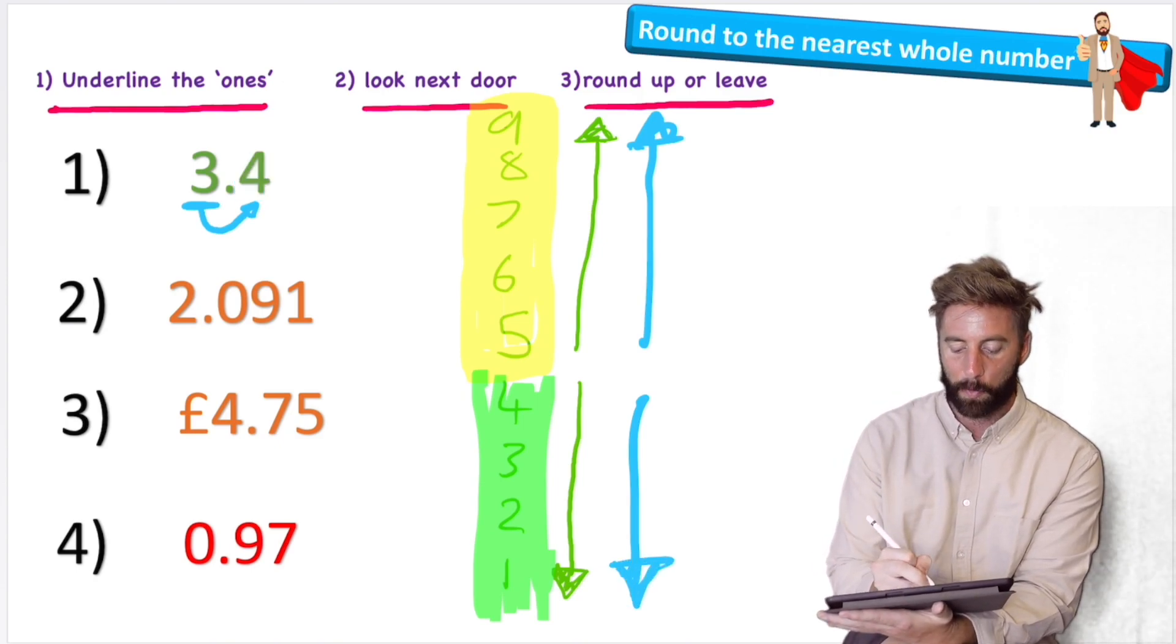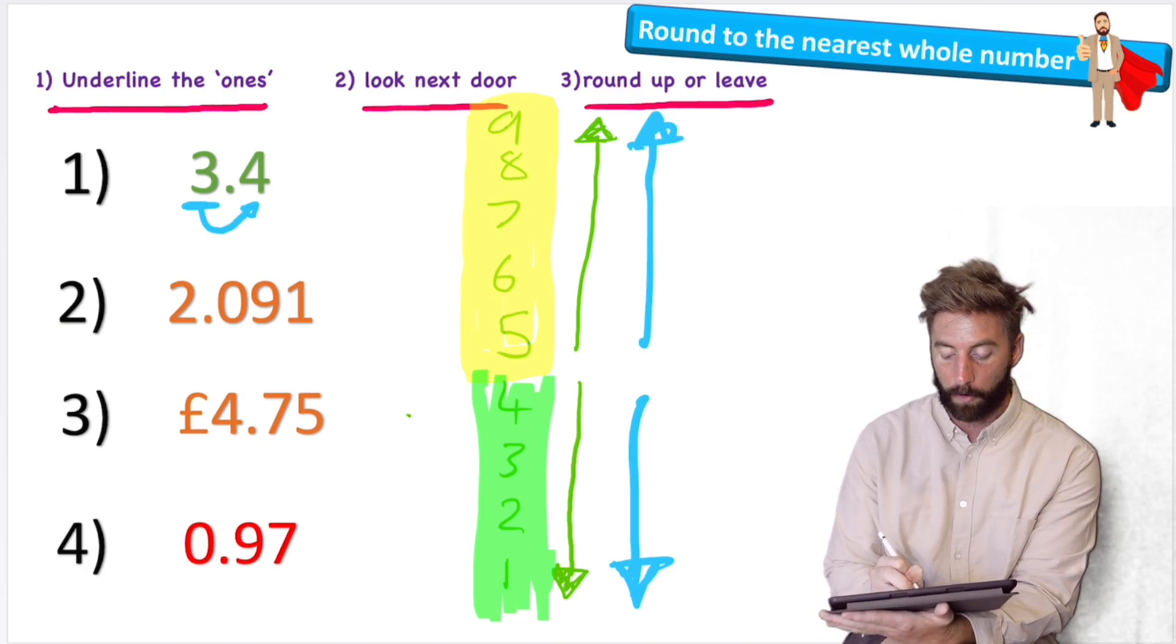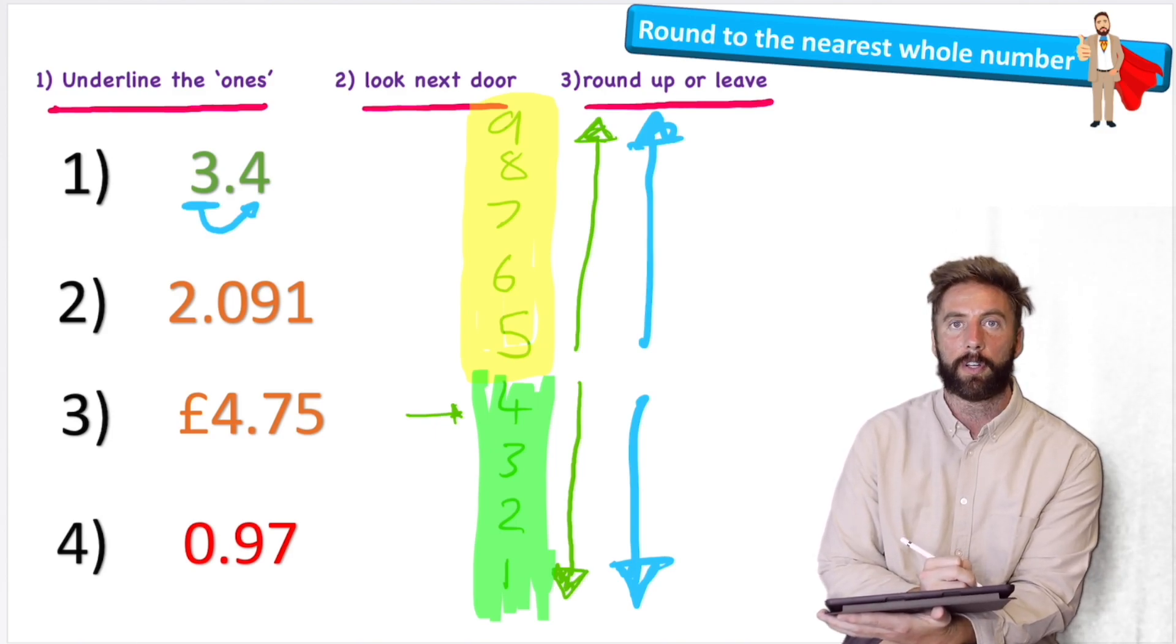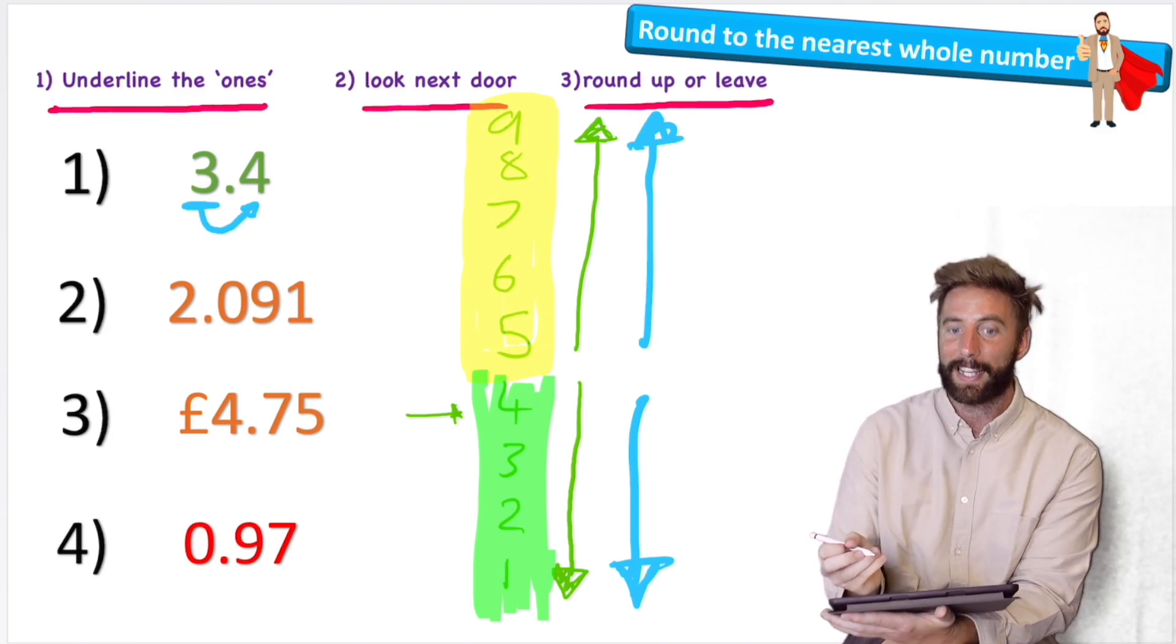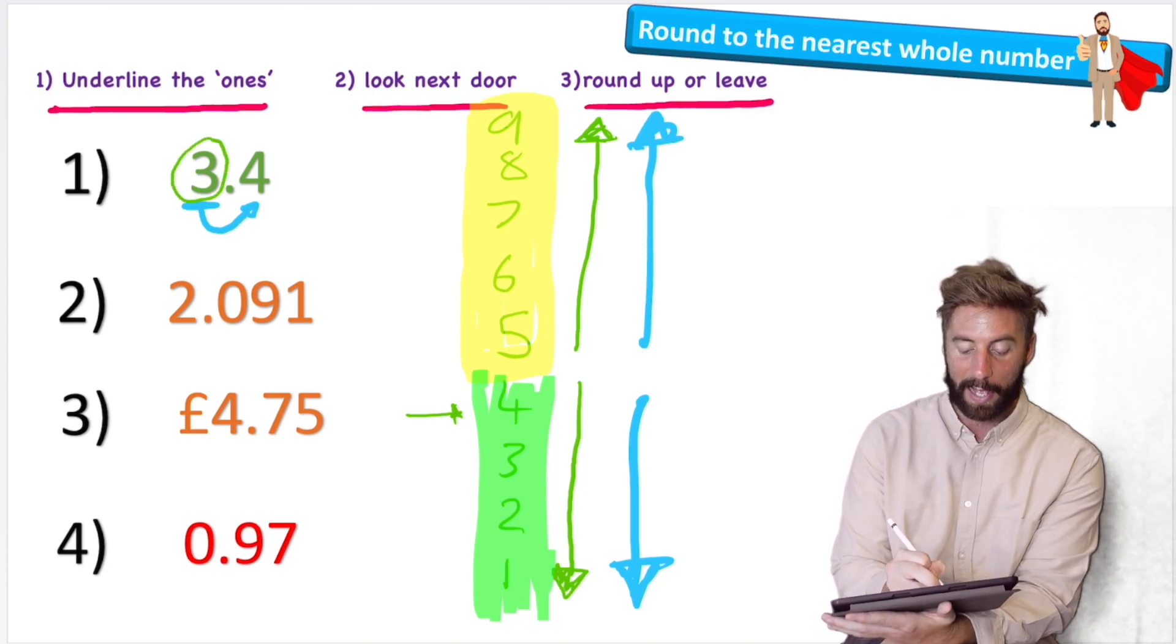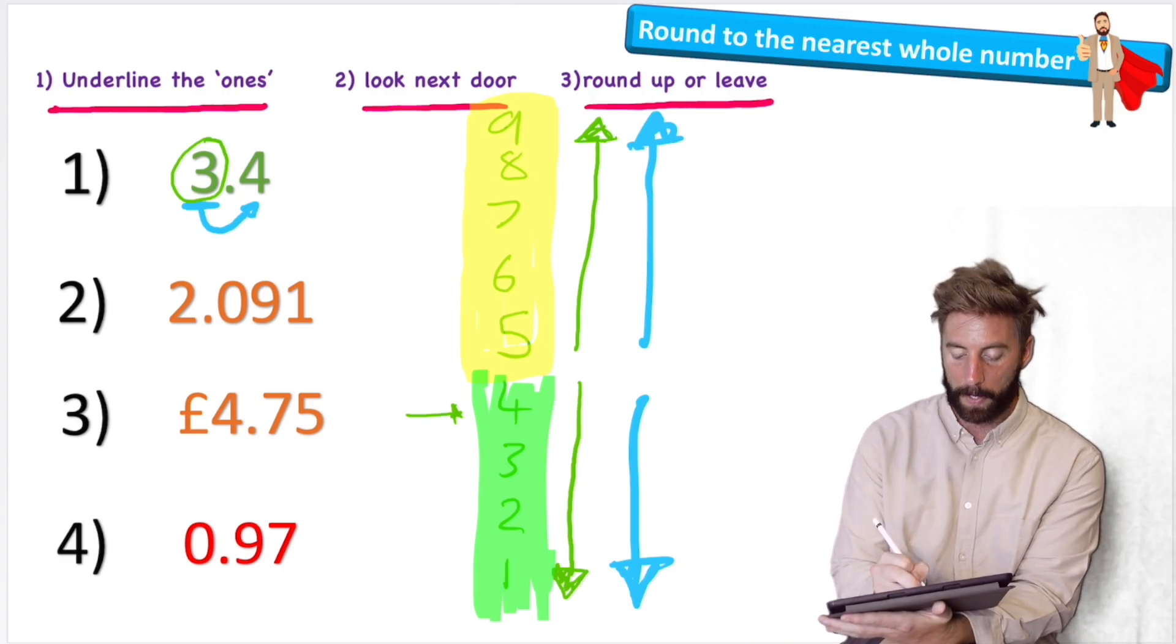Okay, so using this knowledge, let's see what we're going to do to this four that's next to our three. Well, the four is here. And remember, one, two, three, four, four or less, let it rest. So we would end up leaving the three as a three. We would not round it up to a four. So the number would be three.